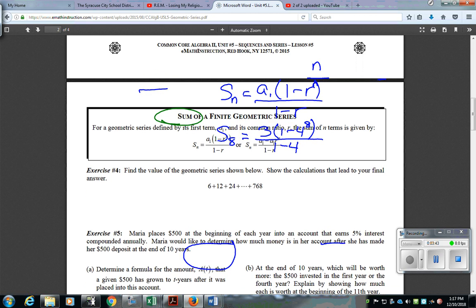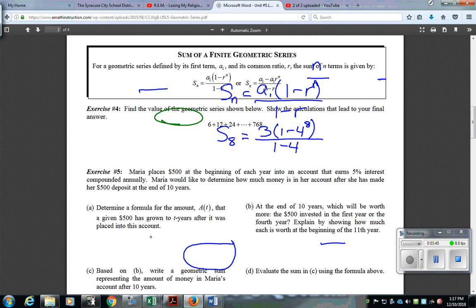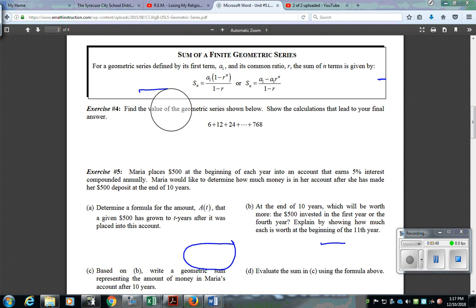Now, for exercise 4, we've got to find the value of the geometric series shown. So, we start off at 6, and it looks like we are increased by multiplication. And then our last number is 768. Now, we're going to have to use our formula from earlier. Because we've got to figure out how many numbers are going to be in this sequence.